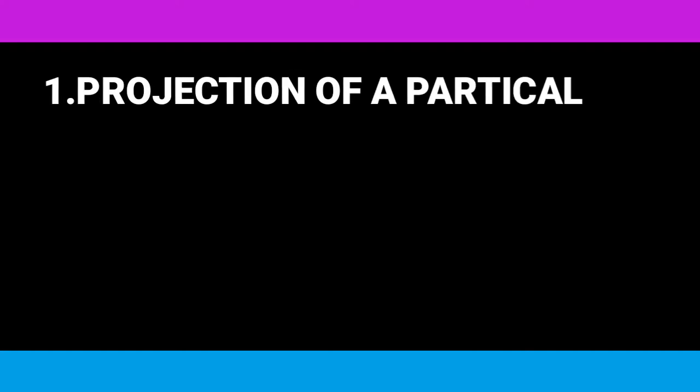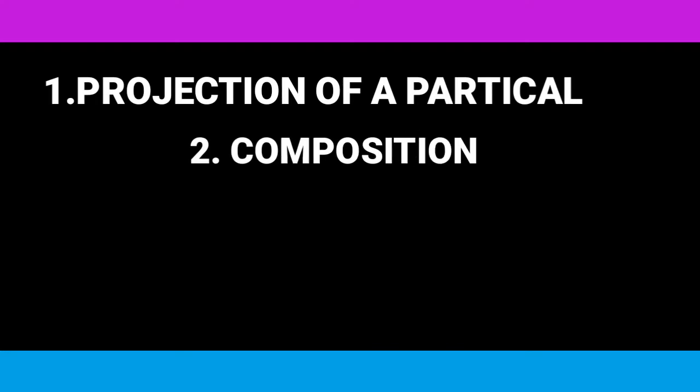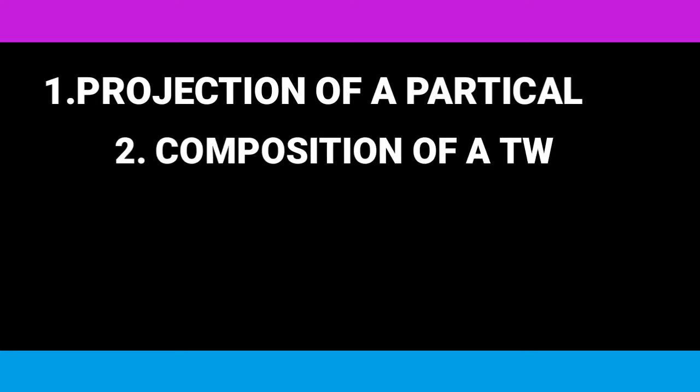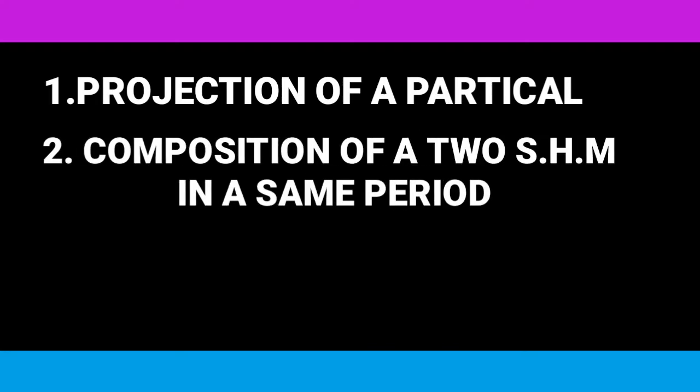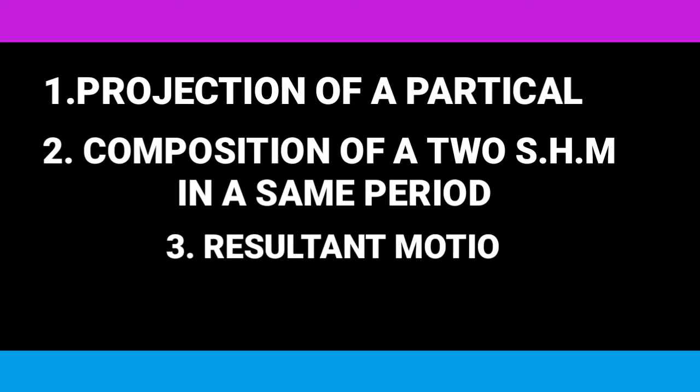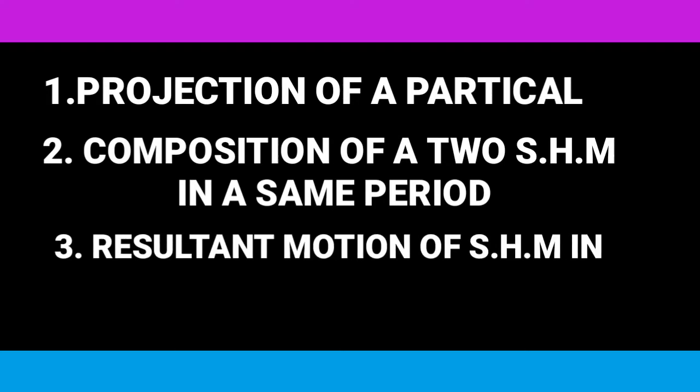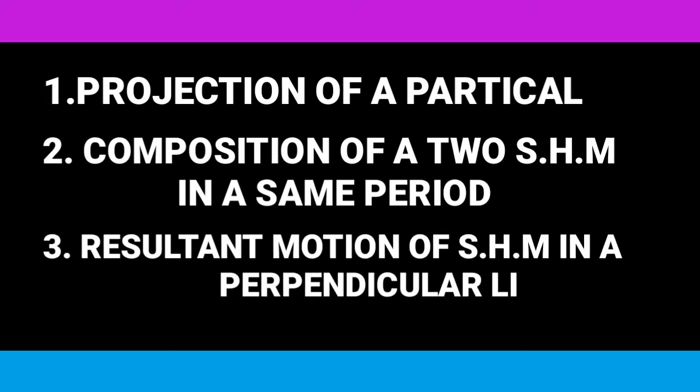Hi friends, here I am going to explain about three topics. The first one is projection of a particle in circular motion. The second one is composition of two SHMs in the same period. The third one is resultant motion of SHM in perpendicular directions, which lies along an ellipse.